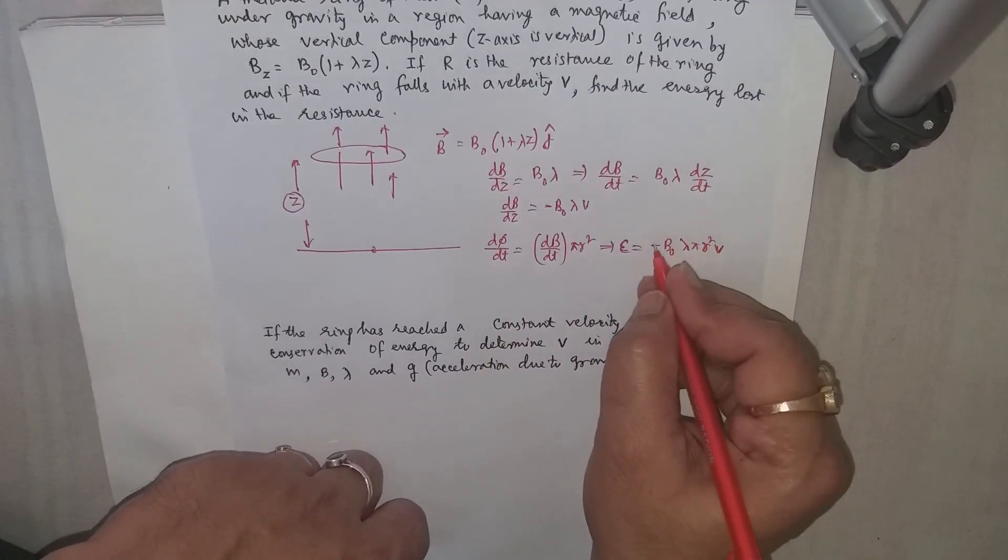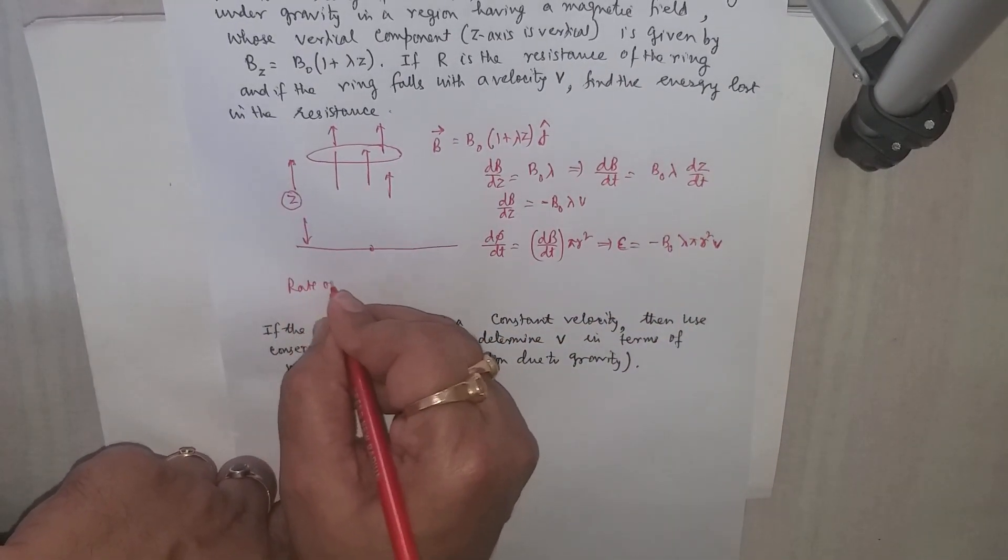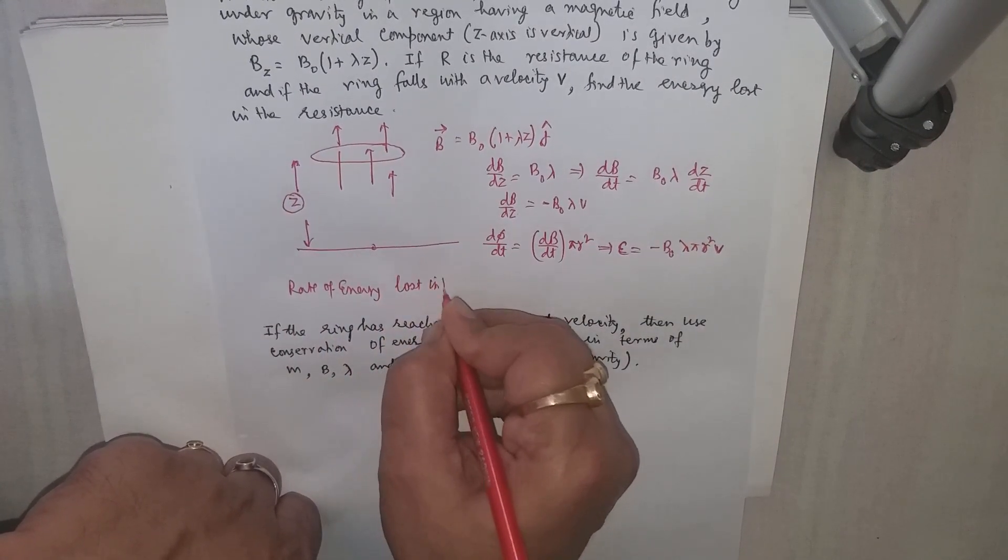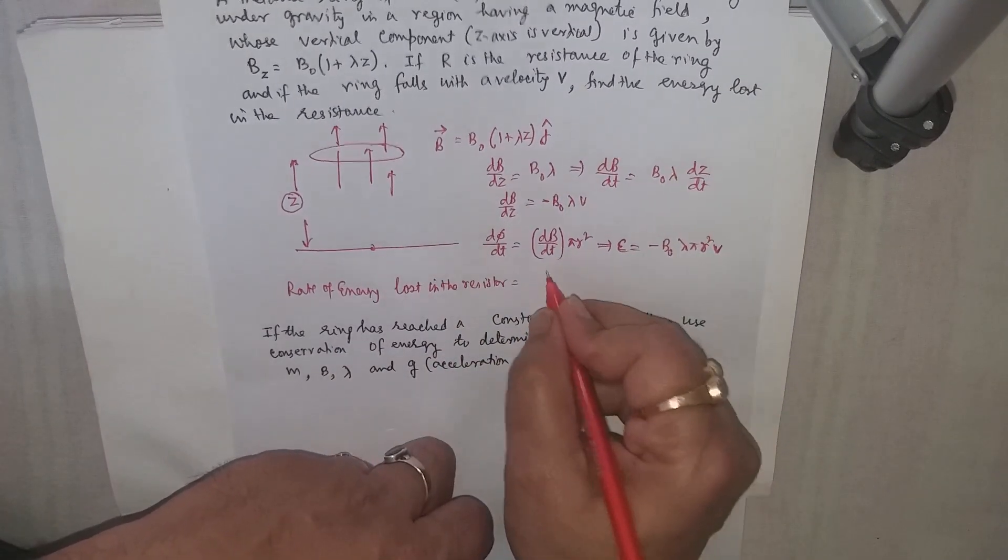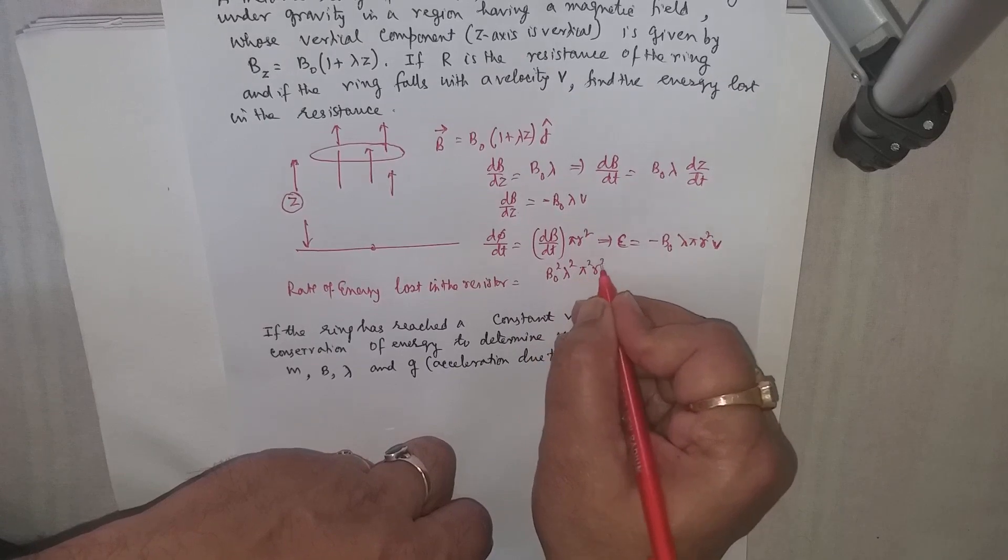So the resulting current will be this EMF divided by r. So the rate of energy lost in the resistor, we can write it as E²/r.